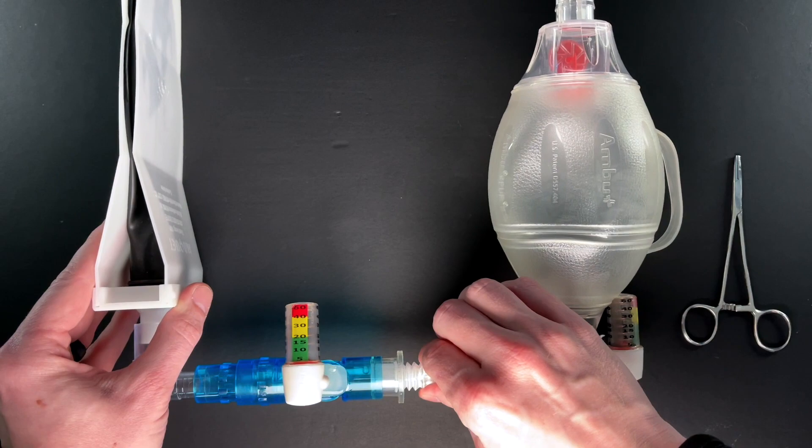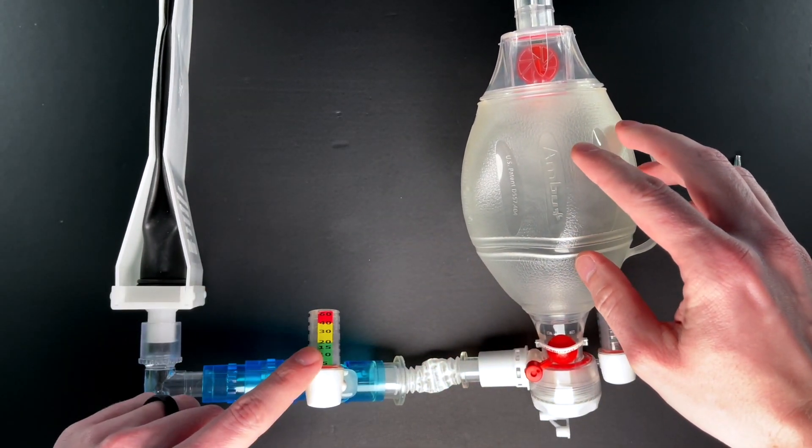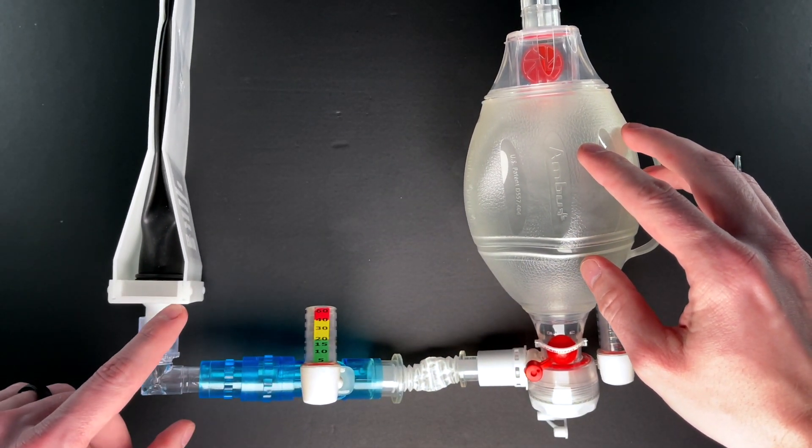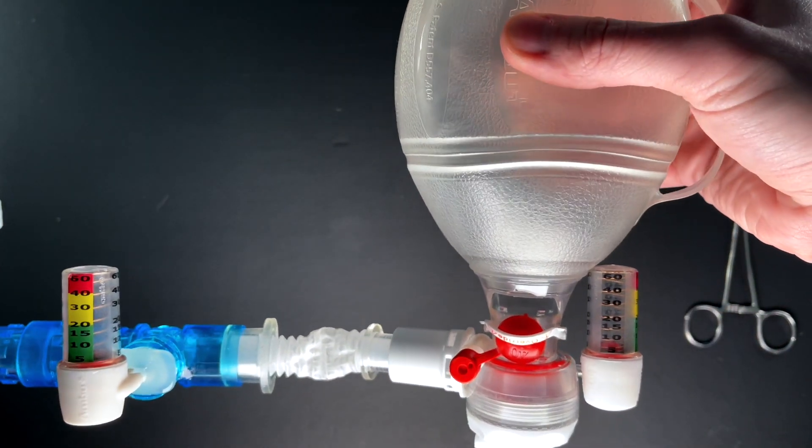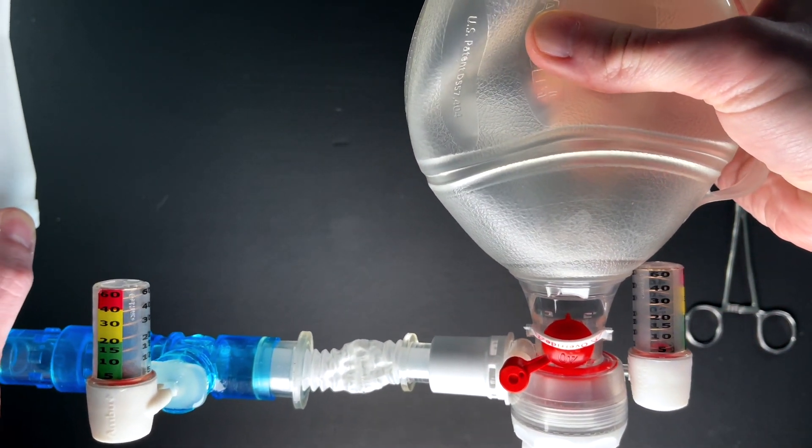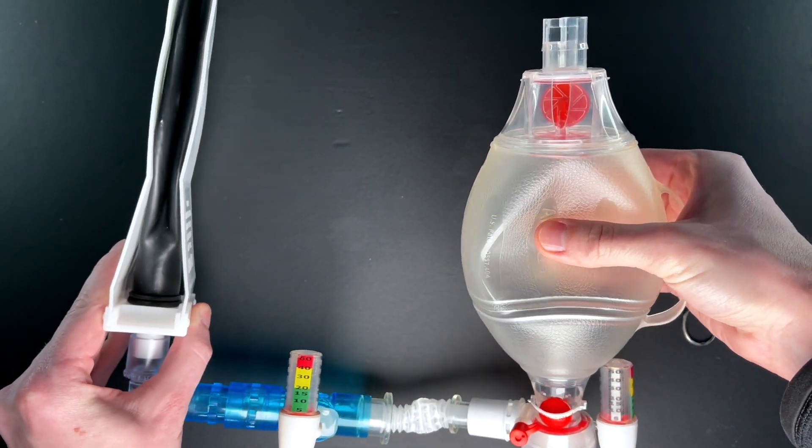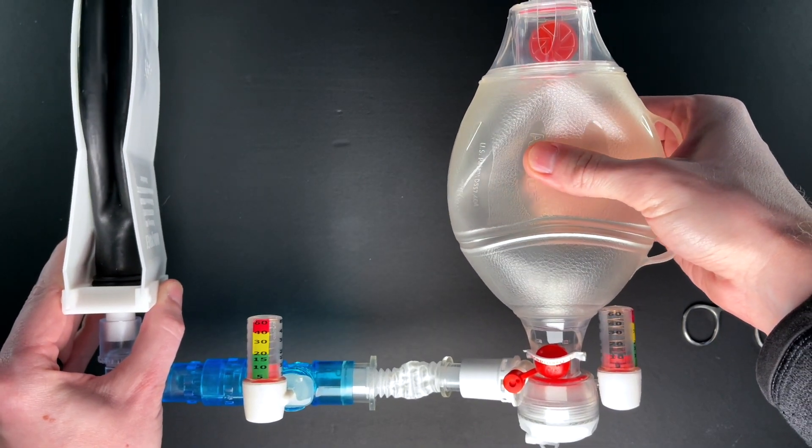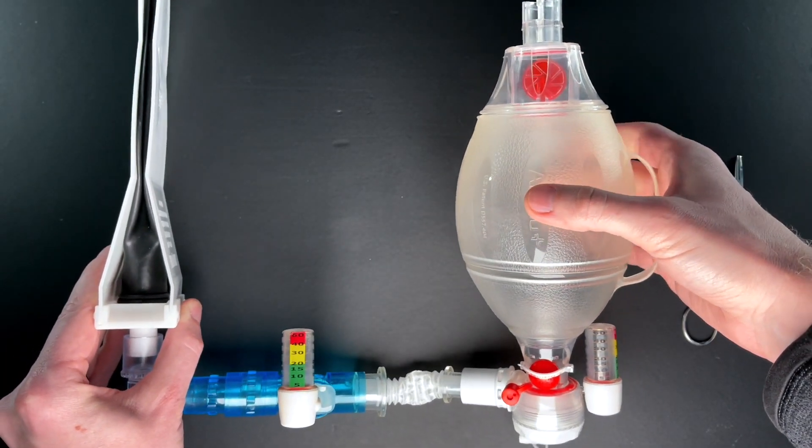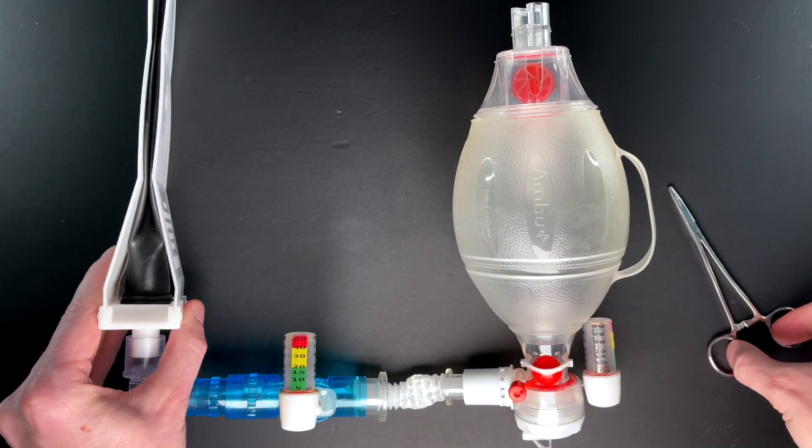The flex is totally open right now, and then there's another manometer here that's connecting to the test lung. We should see when I squeeze this that the pressure manometers are pretty equal. The test lung inflates and deflates like we would expect, and everything is normal.